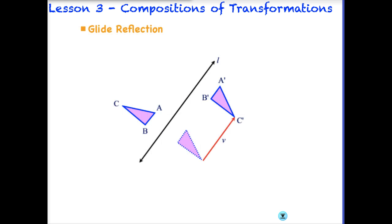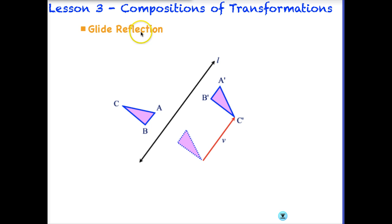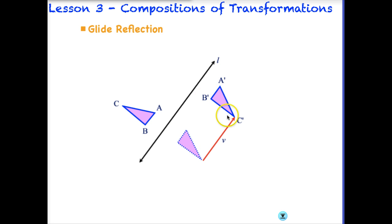Let's look at another composition that is really common: a glide reflection. When you hear glide reflection, think translation and then reflection. A glide is merely just a translation, a movement from one place to another. If we take triangle ABC, remember that we work from back to the front. So the first thing we would do is reflect it over a line to get a dotted triangle, and then we would perform a glide of some vector to get the final image A'B'C'.